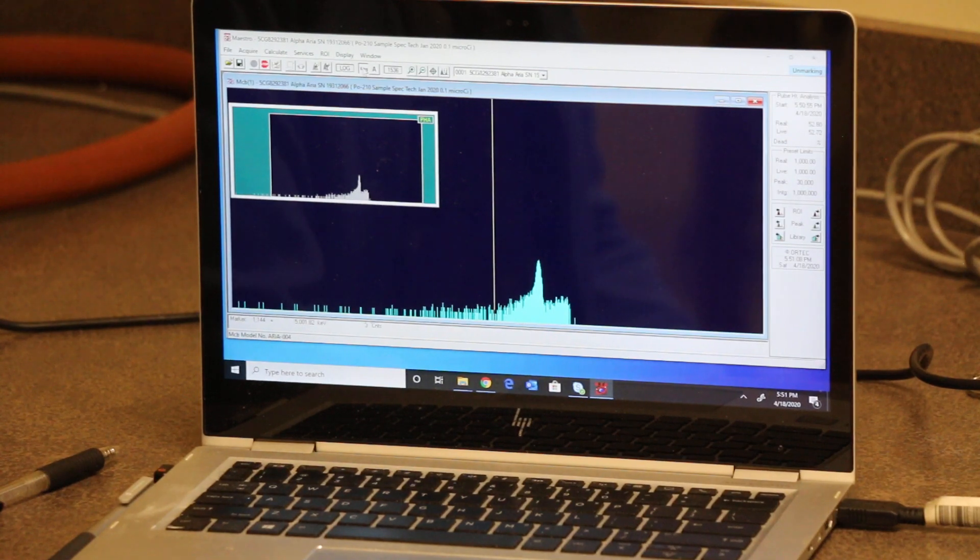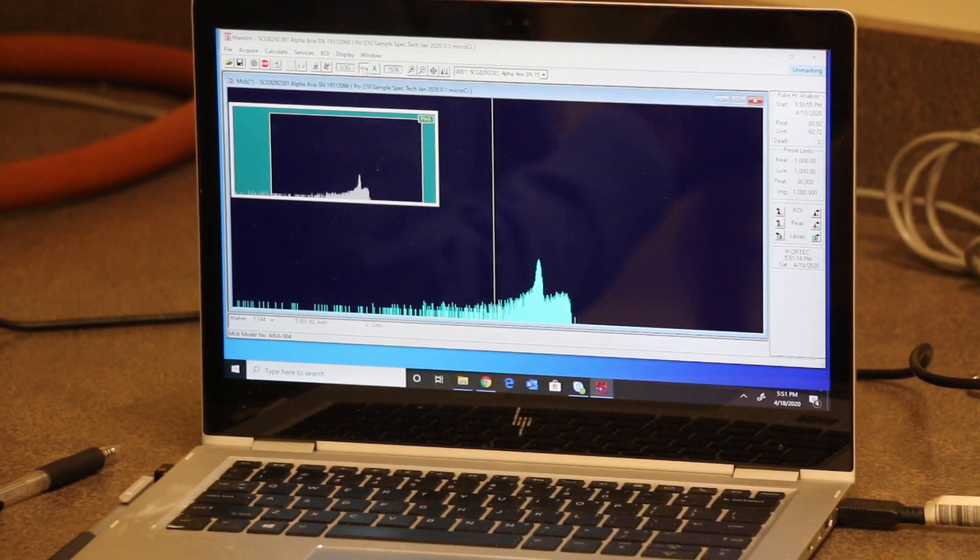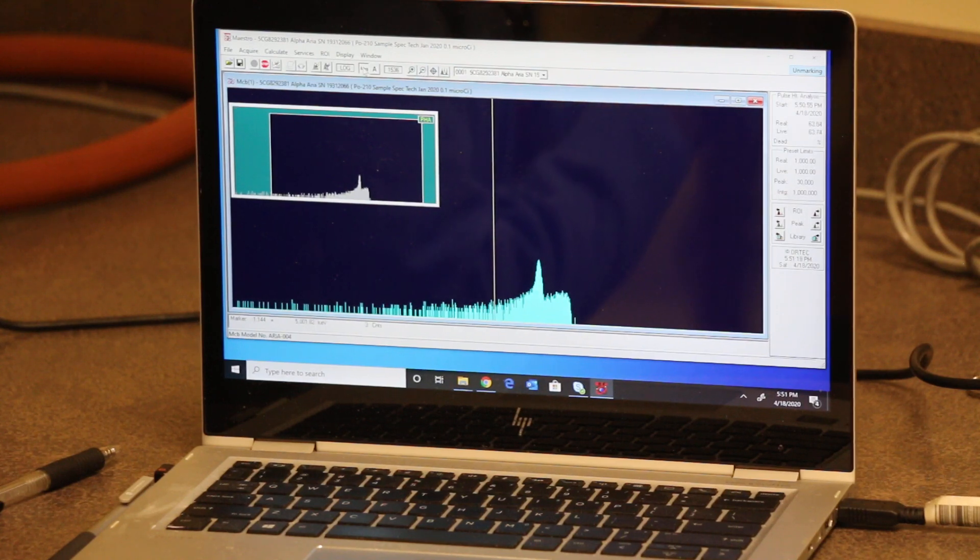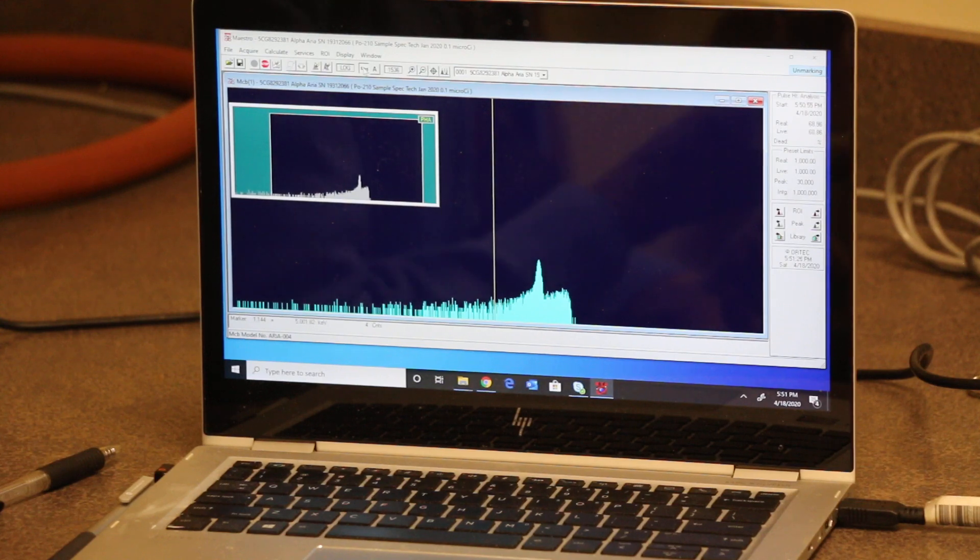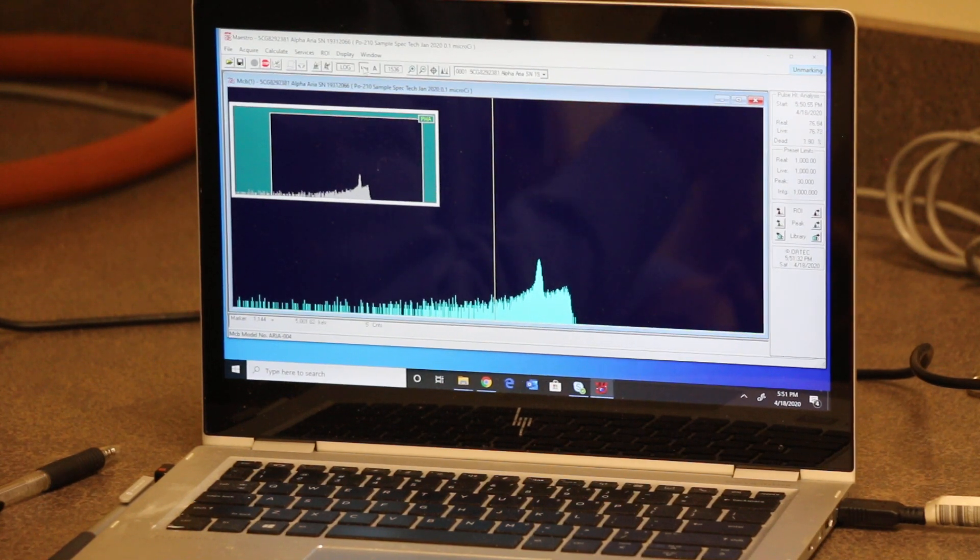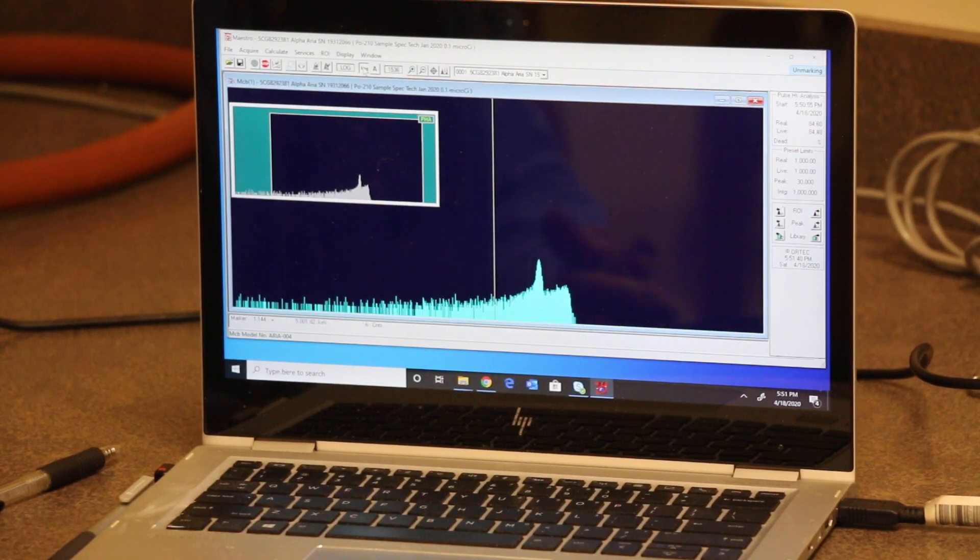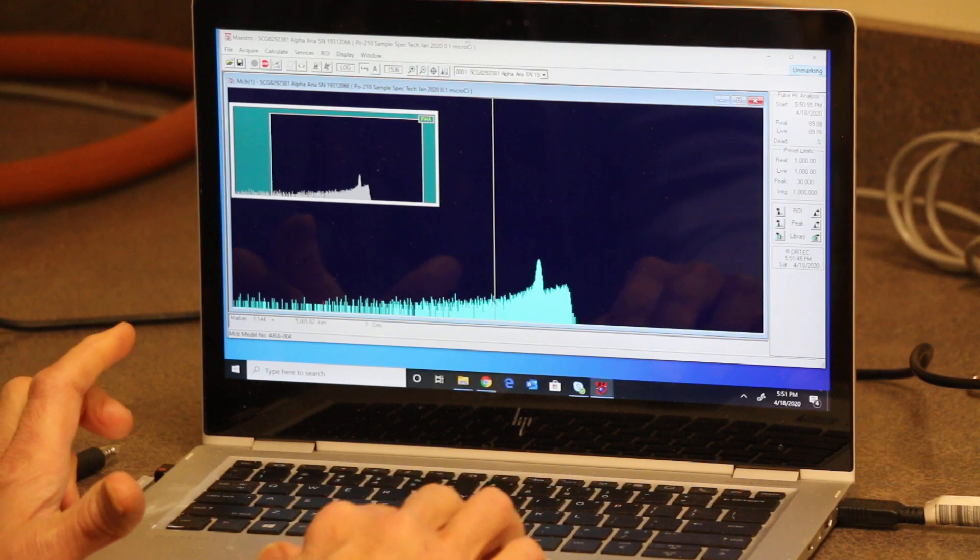Now, one thing you are going to notice is that the americium source has a broader spectrum. And it does because when they make these sources, they electrode deposit them in a very thin film on a piece of metal. You have to do it that way because otherwise the alpha particles would be attenuated and you wouldn't be able to detect it. It turns out that the polonium source uses a much thinner film than the americium source does. So the americium source is attenuating out a little bit and the spectrum is much broader.